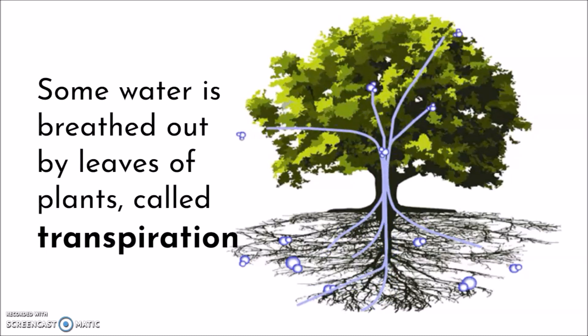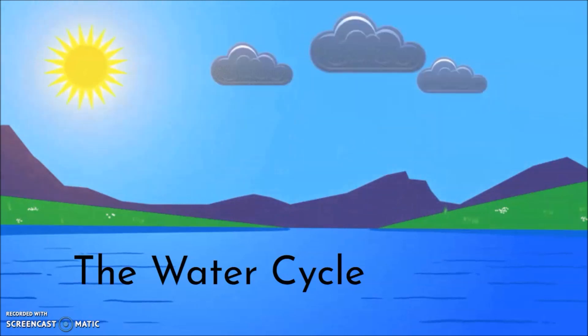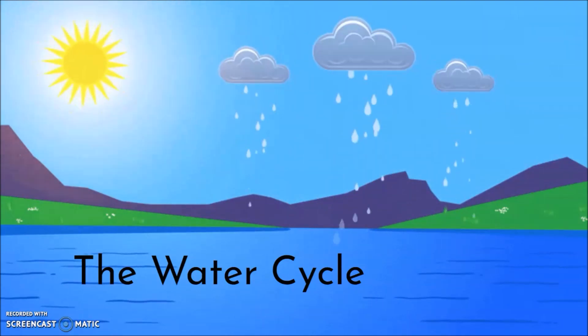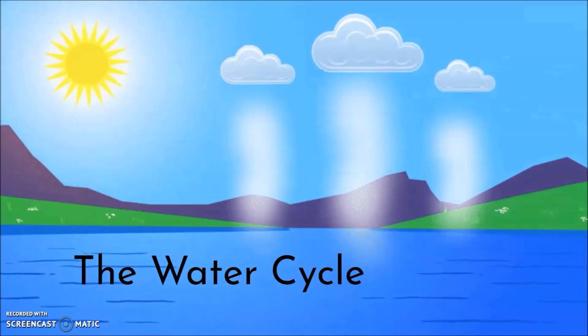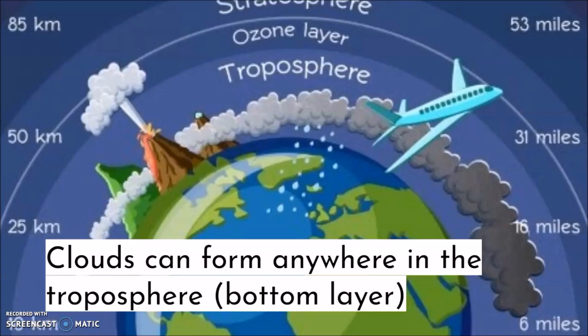Water will enter the air through transpiration or evaporation. This cycle of water going from the ocean into the sky, coming down as rain, and then eventually back into the ocean is called the water cycle. Now let's actually talk about these clouds. Clouds can form anywhere in the troposphere, which is the bottom layer of our atmosphere, closest to Earth.